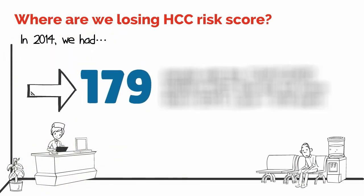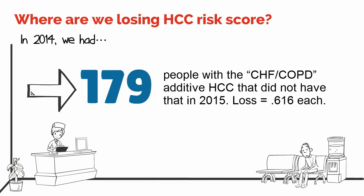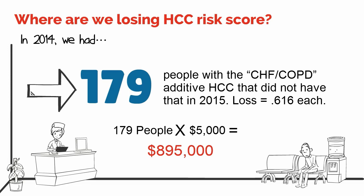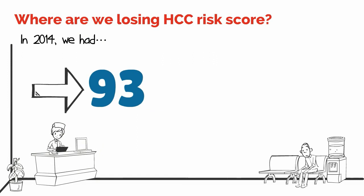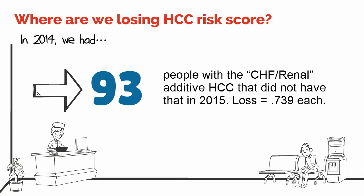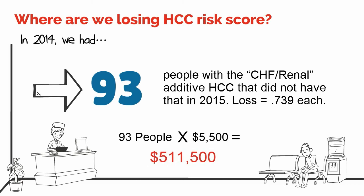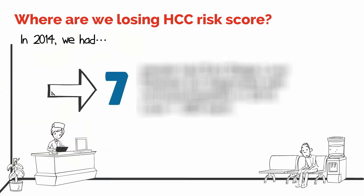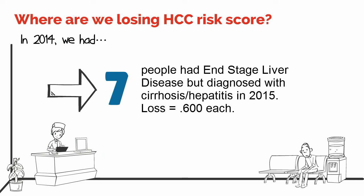Here's another example. In 2014, 179 people had the CHF/COPD additive HCC; in 2015 they did not. That's a loss of 0.616 in risk and over $5,000 in expected costs. In another example, 93 people in 2014 had a CHF/renal additive HCC that did not in 2015 — a loss of 0.739 in risk score. Remember, these are additive HCCs, so if they do not have the additive HCC, that means they also lost either the CHF or the renal failure HCC. As a final example, in 2014 we had seven people diagnosed with end-stage liver disease, but in 2015 they were diagnosed with cirrhosis or hepatitis — a significant loss of 0.600 in risk score for each individual patient.